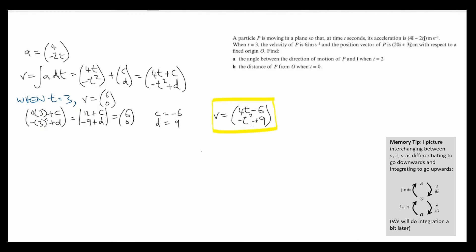We've been asked to find the angle between the velocity and i when t equals 2. So let's substitute t equals 2. And we get a velocity function 2, 5. Just a quick sketch of this. We're trying to find the angle in between this and i, which is the horizontal here. So we can use the tan function, tan theta equals 5 over 2. Theta is going to equal 68.2 degrees.